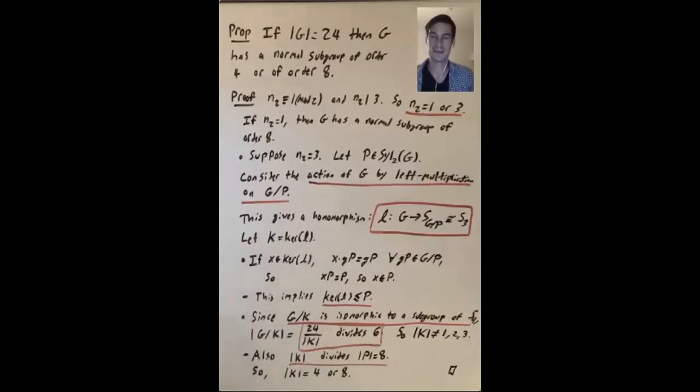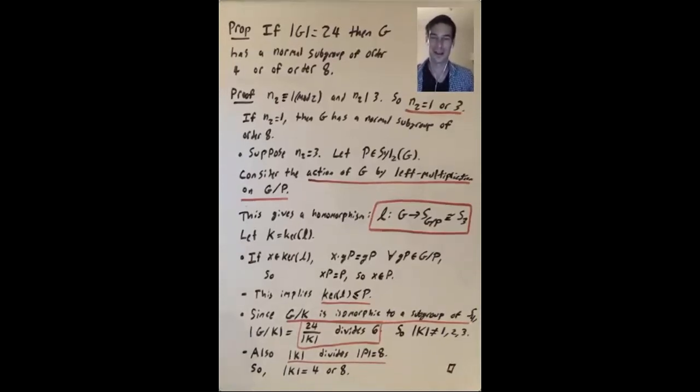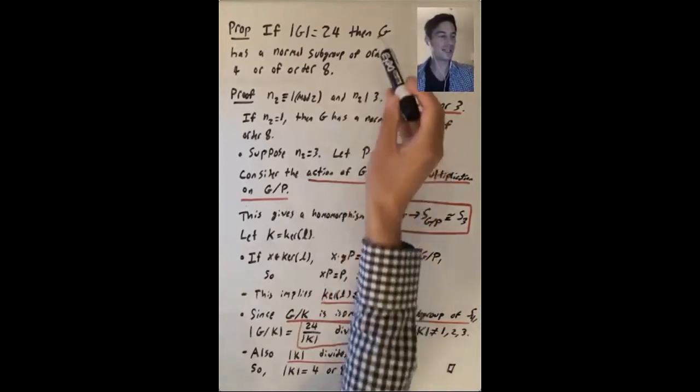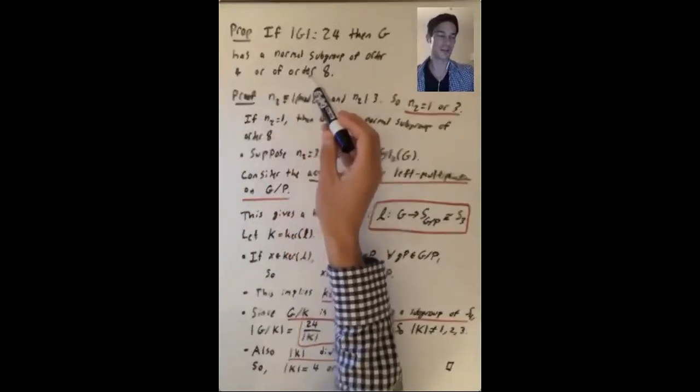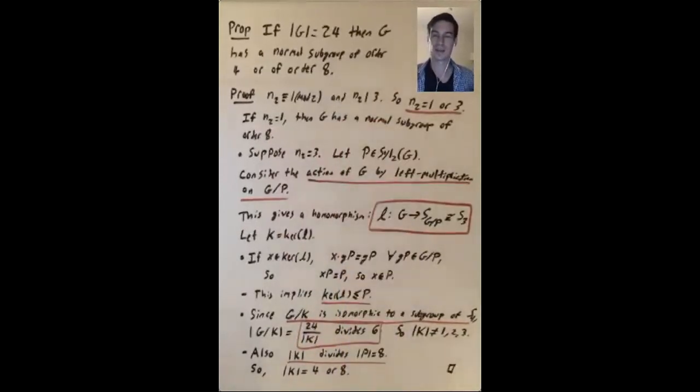The next thing we want to prove is about groups of order 24. Let's suppose g is a group of order 24, and we want to show that g has a normal subgroup of order 4 or g has a normal subgroup of order 8. So the biggest power of 2 dividing 24 is 8. So this is a good hint that we should look at Sylow 2 subgroups.